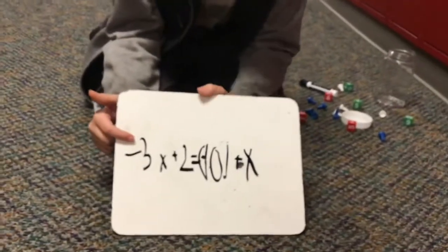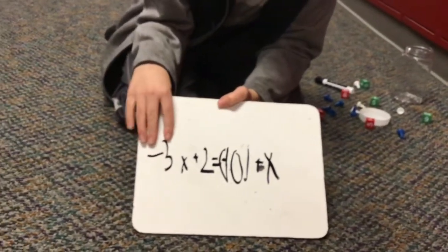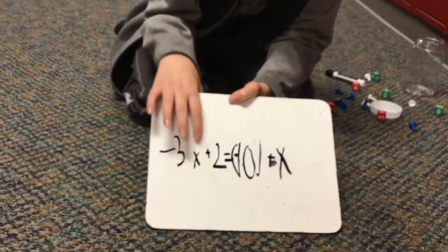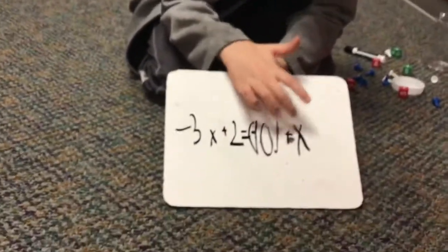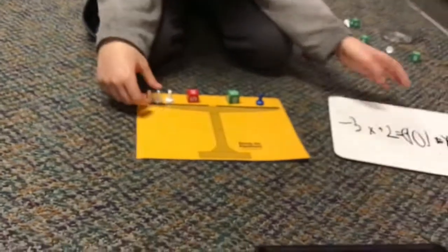This is problem number 2. The opposite of 3X plus 2 equals negative 10 plus X. Here we have our problem.